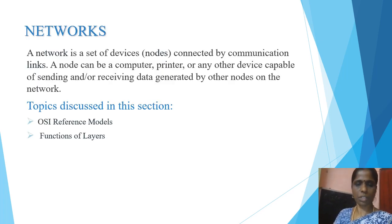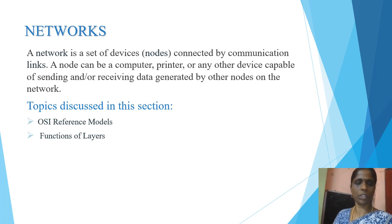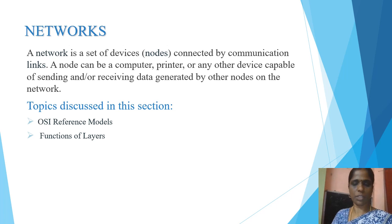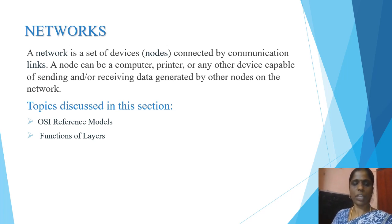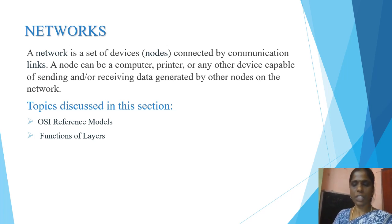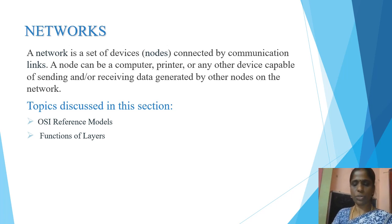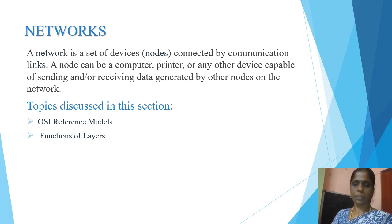A network is a set of devices. Interconnection between two devices in the communication line is called a network. The communication link is mainly used for connection between two devices. A node can be a computer, printer, or any other device capable of sending and receiving data generated by nodes on the network. Network is mainly used for sharing and accessing more information.